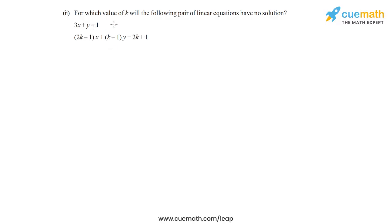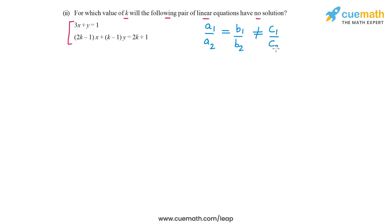In part 2 of question 2, the question says: for which value of k will the following pair of linear equations have no solution? For a pair of equations to have no solution, the constraint is that A1 by A2 should be equal to B1 by B2, but these two ratios should not be equal to C1 by C2. This is because the two equations will then represent parallel lines which never intersect, and hence the pair has no solution.